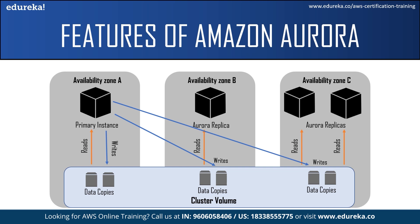The benefit of Aurora replicas is high availability, as they are located in separate availability zones. So when a primary DB instance becomes unavailable, Aurora automatically fails over to an Aurora replica. You can also specify the failover priority for your Aurora replicas. This was only for the single master configuration. You also have a multi-master cluster where all DB instances have read-write capability, and the distinction between primary instance and Aurora replica does not apply.